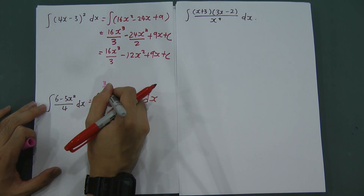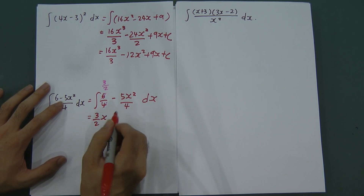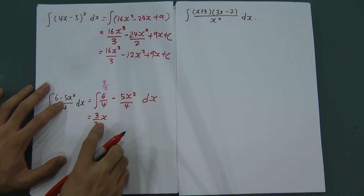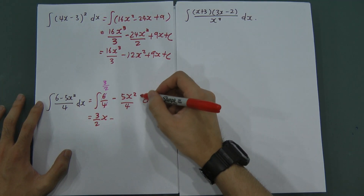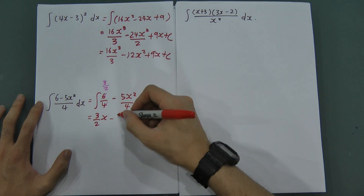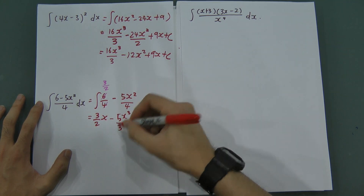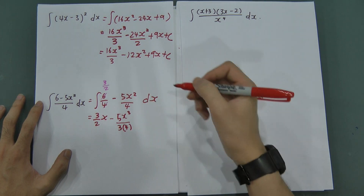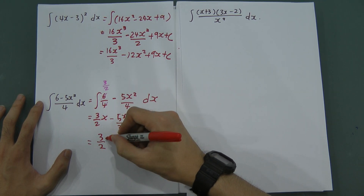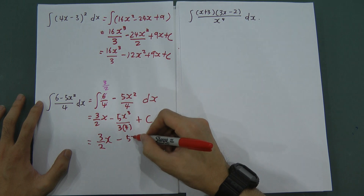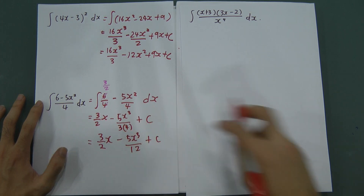After simplifying the first term, you get 3/2, so you write 3x/2. For the second term, the power is 2, add 1 to get 3, divide by 3, giving 5x³ divided by 3, then multiply by 4 on the bottom. The final answer is 3x/2 minus 5x³/12 plus C, because 3 multiplied by 4 gives 12.